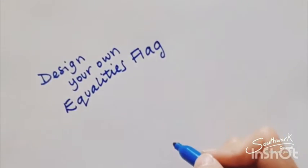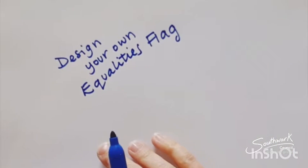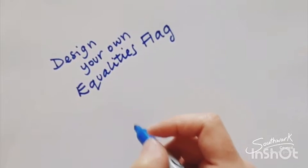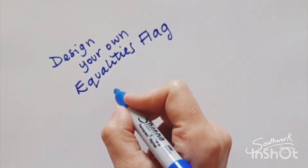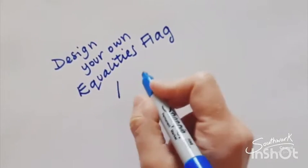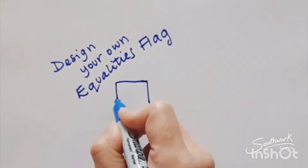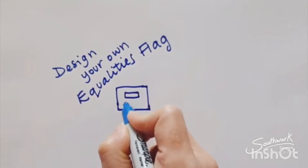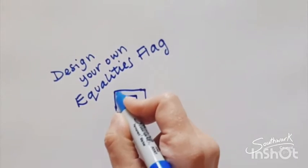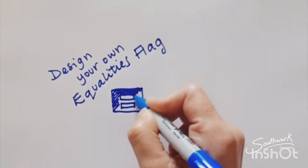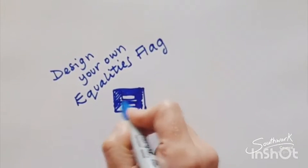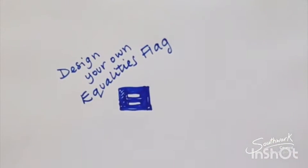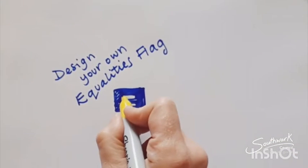So, what is the Equalities Flag? Well, the Equalities Flag is a flag that's been designed to represent equal opportunities for all people. And it looks roughly like this. It's a blue flag with an equal sign in the middle. It's very simple, bold colours. And the equal sign is yellow.